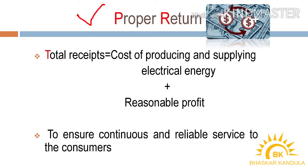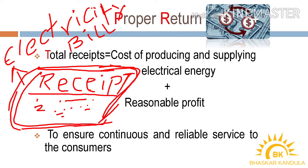Proper return: the total receipts from the consumers must be equal to the cost of producing and supplying electrical energy plus a reasonable profit. This will enable the electric supply company to ensure continuous and reliable service to the consumers.